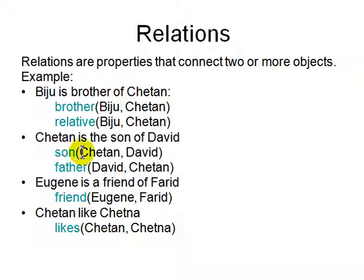For example, Chetan is a son of David, but that doesn't mean David is a son of Chetan. And then there is a relation called friend. Eugene is a friend of Farid. And then similarly we have Chetan likes Chetan, so we say likes(Chetan, Chetan). Now similarly, there is no guarantee that A likes B implies B likes A. It's not symmetric again.